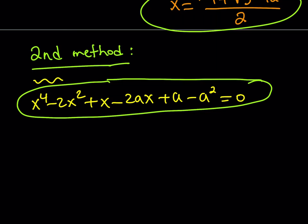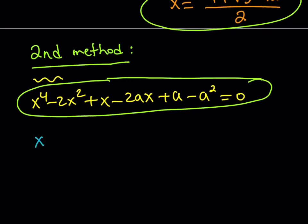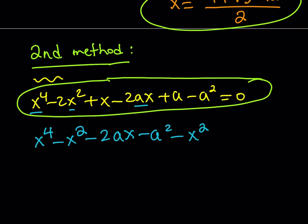What I'm going to do is manipulate this equation a little bit. I'm going to take the minus 2x squared term and split it up. I'll take minus x squared, then bring the minus 2ax, then minus a squared. I used half of the minus 2x squared term there. The remaining minus x squared plus x plus a is what's left.